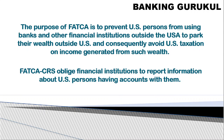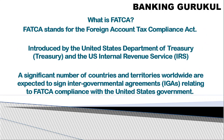The purpose of FATCA is to prevent US persons from using banks and financial institutions outside the US to park their wealth. Wealth includes assets earned after tax — investments in real estate, gold, shares, debentures, buildings, and commercial flats. If a US person is earning money in the US, paying tax there, and then investing that wealth outside the US, that information must be sent back to the US in a standard format.